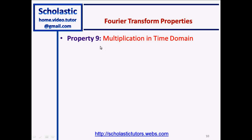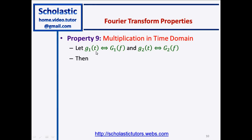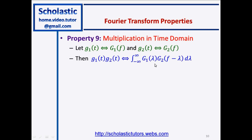Property number nine: multiplication in the time domain. We have two functions g1(t) and g2(t), with frequency domain representations G1(f) and G2(f) respectively. If you multiply g1(t) and g2(t) in the time domain, that becomes a convolution in the frequency domain, written as the integral from minus infinity to plus infinity of G1(λ)·G2(f - λ) dλ. This is frequency domain convolution corresponding to time domain multiplication.